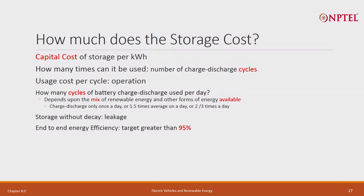End-to-end energy efficiency — what you have to do is take AC energy, convert it to DC, charge, store, take out the energy, convert the DC energy back into AC. What is the end-to-end loss? Typically for large batteries you can get 95, 96, 97 percent — so there is a 4 to 5 percent loss for lithium-ion battery. That is kind of the best you can do, probably 97 percent, and tomorrow it may become 98 percent.